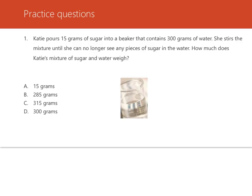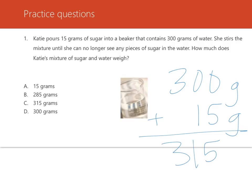It's practice question time. Number one: Katie pours 15 grams of sugar into a beaker that contains 300 grams of water. She stirs the mixture until she can no longer see any pieces of sugar in the water. How much does Katie's mixture of sugar and water weigh? The weight of a mixture is equal to the weight of each of its parts added together. So the weight of Katie's mixture equals the weight of the water, 300 grams, plus the weight of the sugar, 15 grams — the mixture combined must be 315 grams, so the answer is C.